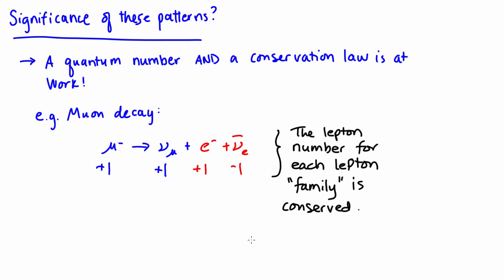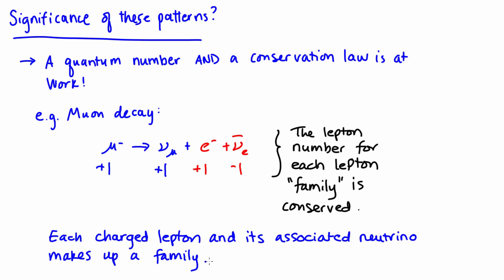As it turns out, all the reactions that involve leptons follow this rule. So, this leads to our first new conservation law. In any reaction, the lepton number for each lepton family must be conserved. This conservation law is in addition to the conservation laws we've already learned, either in this module or in previous ones. So, that's conservation of charge, conservation of linear and angular momentum, and conservation of energy.